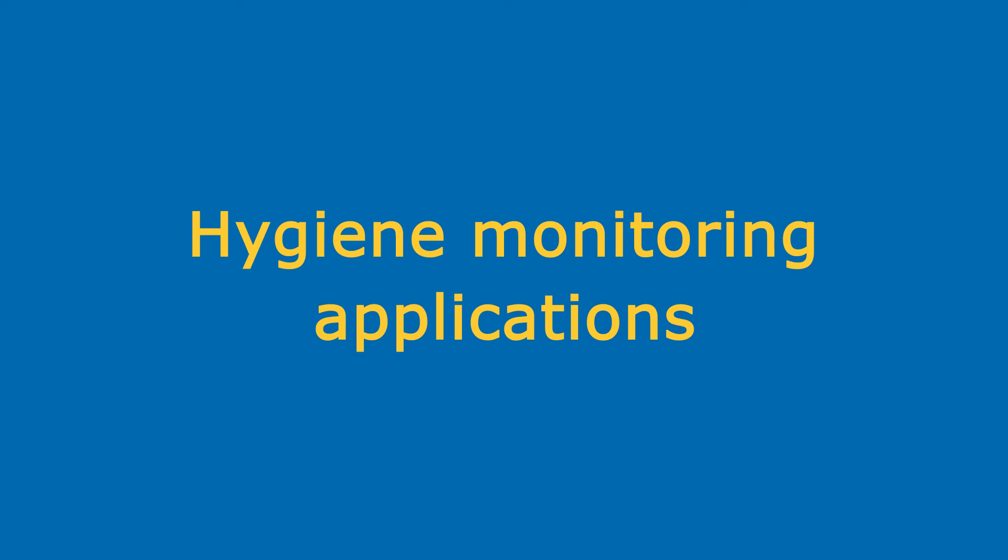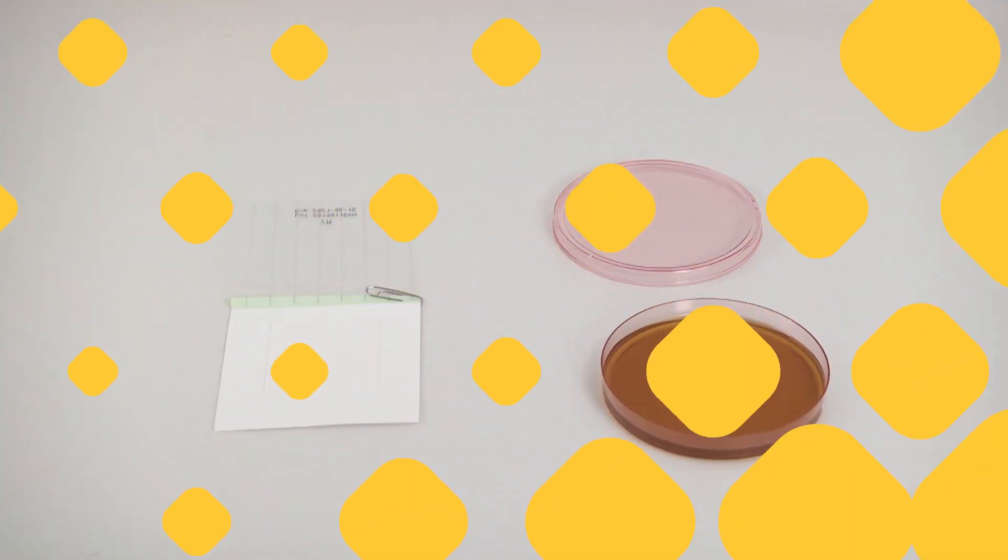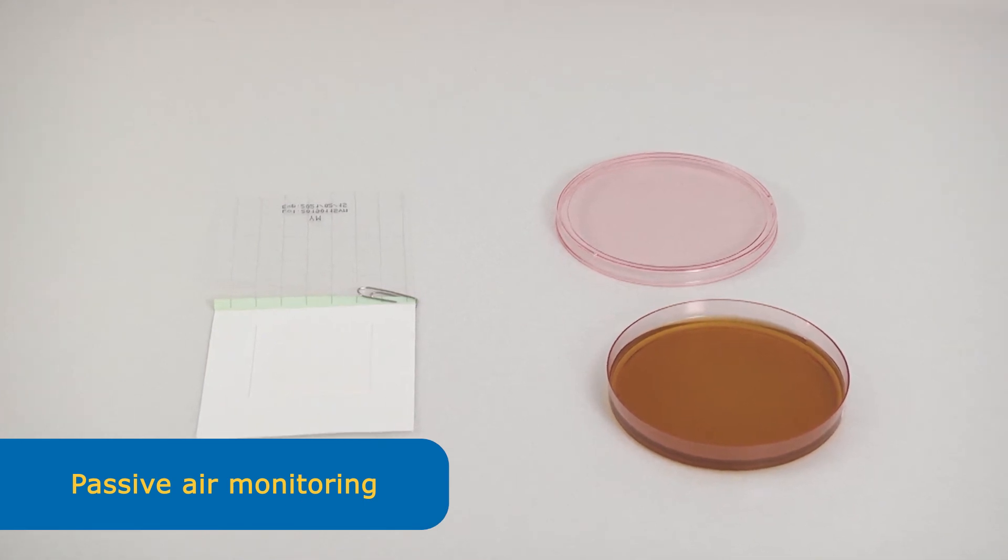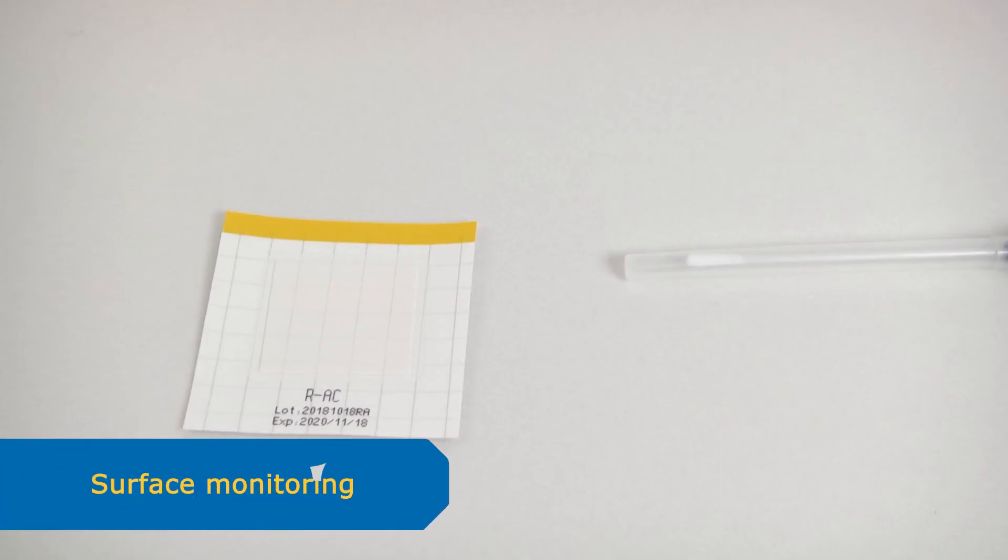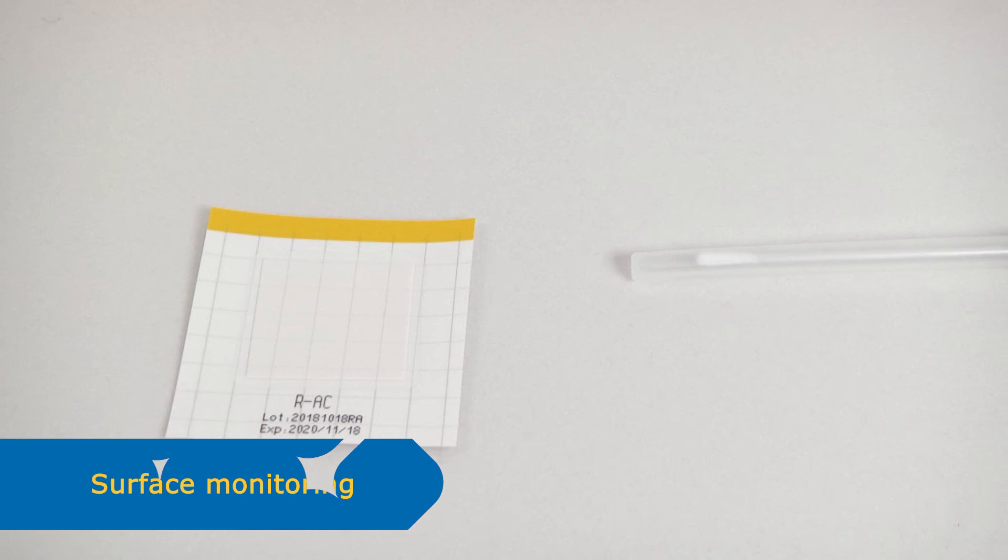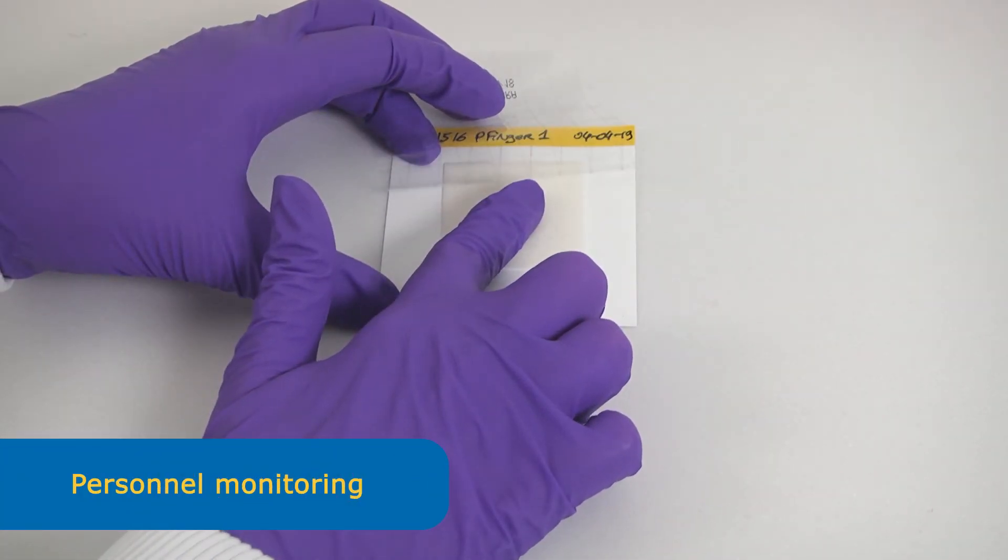MC MediaPad is a versatile product. It can also be used for hygiene monitoring. Just open the pad for passive air monitoring. For surface monitoring, simply use a swab or a pad for direct surface contact. It is also suitable for personnel monitoring.